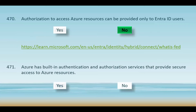Question number 471. Azure has built-in authentication and authorization services that provide secure access to Azure resources — is this statement right or wrong? This is a correct statement. Microsoft Entra ID acts as an authentication service, managing user identities and validating credentials. Role-based access control provides authorization by assigning roles to users, groups, or service principals, determining what actions they can perform on specific resources.